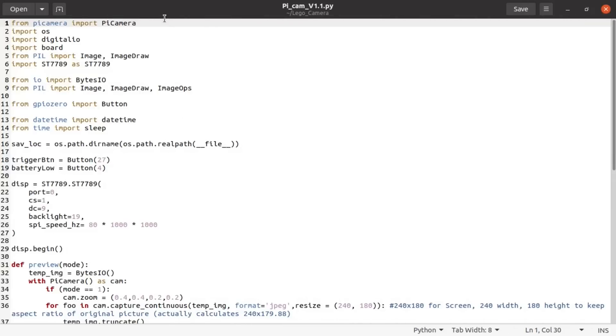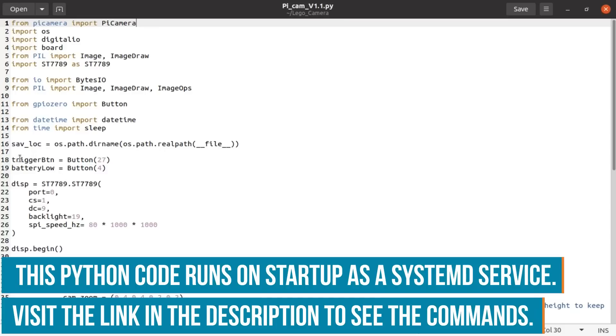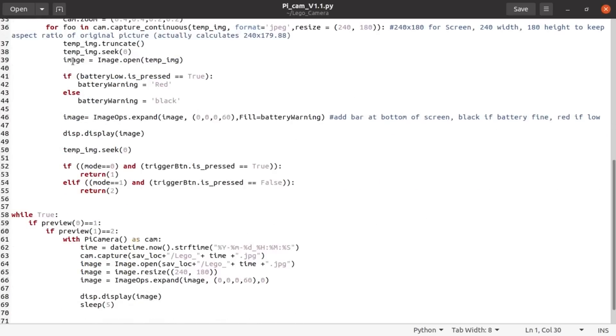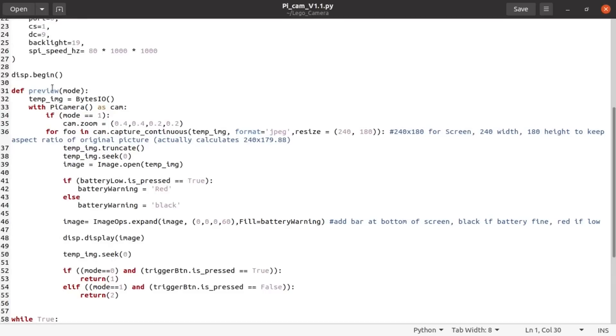So this is the code to go on the Pi. We're importing all the libraries that we need. We're then setting up the location we want our photos to be saved on the Pi. I'm then setting up a trigger button and battery low which is an input on the Pi from the LiPo shim. Then we're setting up the LCD. I've then got preview so when we're in our main while loop it will enter into preview in mode zero. So that means it will load the camera in continuous mode at 240 by 180 resolution because that's enough for the LCD screen. At the moment this is just going to be showing us the picture of what we're looking at before we take our picture.